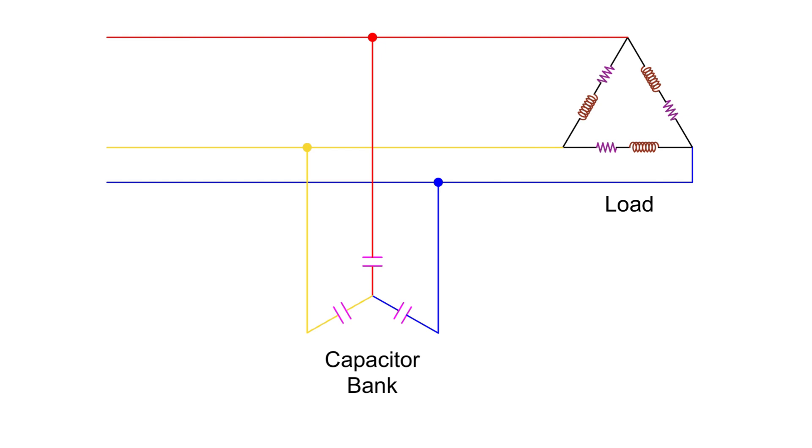But in a star connection, each capacitor is connected from one phase to the neutral point. Now if you want to look at how the system behaves line to line, the combination becomes a series connection of two capacitors. This is because the line-to-line voltage appears across two branches of the star, one from each phase to neutral.